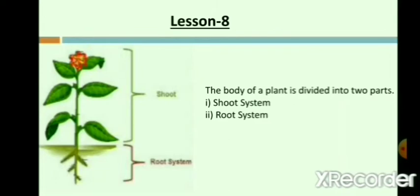Children, if you look in your neighborhood, you can find different types of trees. Do you know that as your body is divided into different parts, in the same way, a plant's body is also divided into two parts. First is the shoot system and the second is the root system. The shoot system is the part of the plant that is above the ground. It includes organs such as stem, leaves, flowers and fruits.